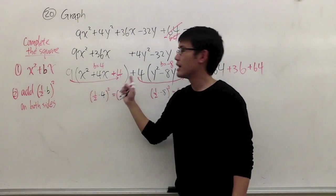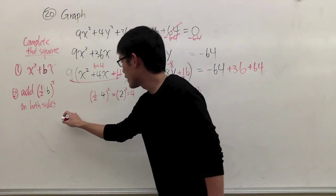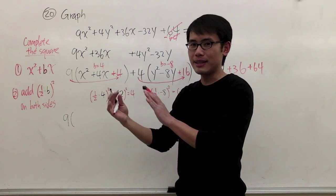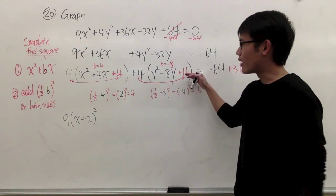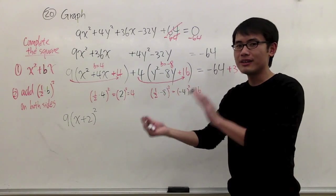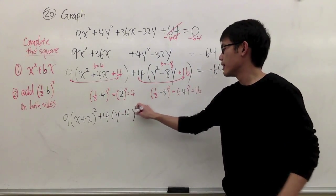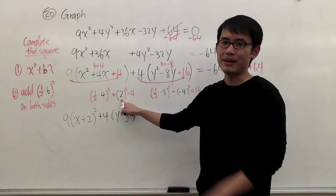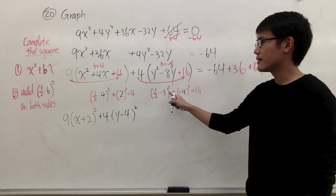After adding 4 inside the x parentheses, that part is guaranteed to be factorable. For the first part we get 9 times — x squared plus 4x plus 4 factors as x plus 2 squared. For the second part, y squared minus 8y plus 16 factors as y minus 4 squared, so we have plus 4 times y minus 4 squared. Notice that the 2 and the negative 4 match exactly the one-half times b values we computed.